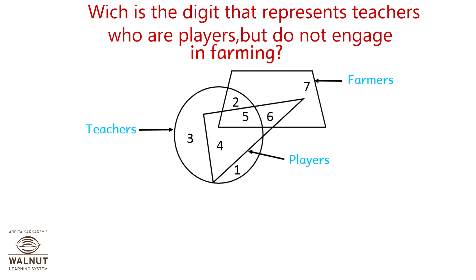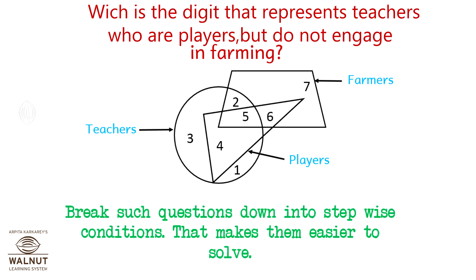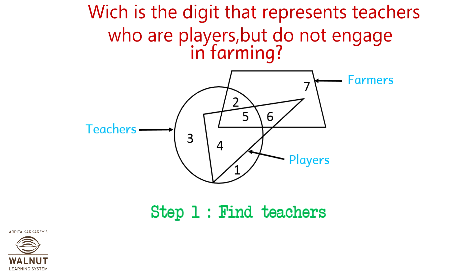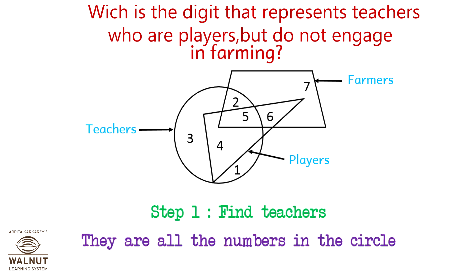Which is the digit that represents teachers who are players but do not engage in farming? Break such questions down into stepwise conditions — that makes them easier to solve. Step 1: Find the teachers. They are all the numbers in the circle: 1, 3, 4, 2, 5.